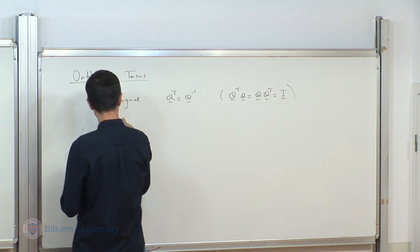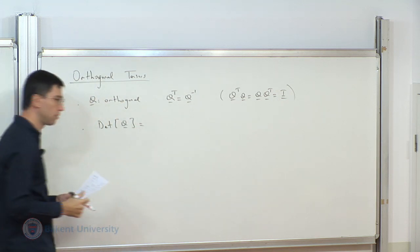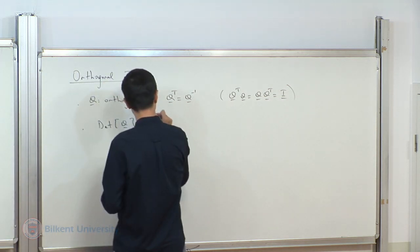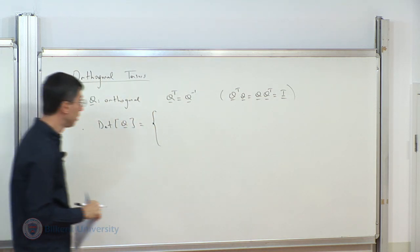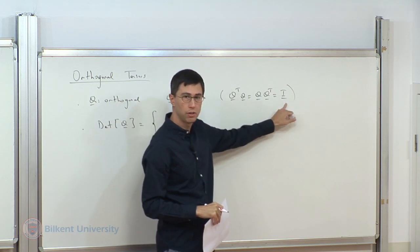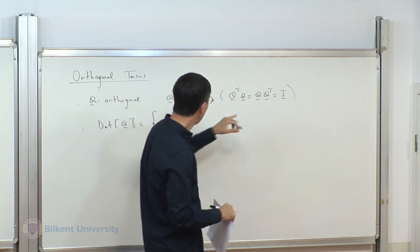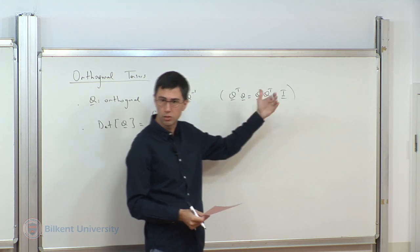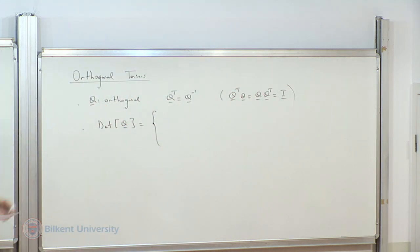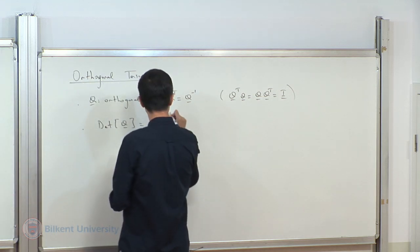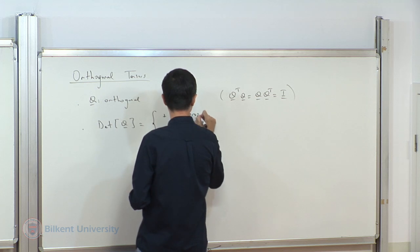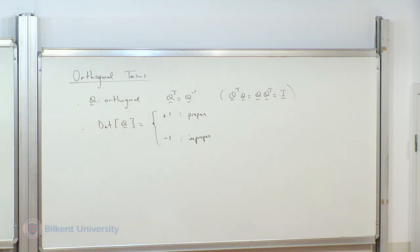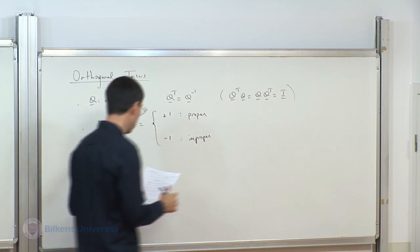Looking at the determinant of an orthogonal tensor: the determinant of Q transpose equals the determinant of Q, so the determinant of Q squared equals 1. Therefore the determinant of Q must be either plus 1 or minus 1. If it is plus 1, the tensor is called a proper orthogonal tensor. If minus 1, it is called an improper orthogonal tensor.